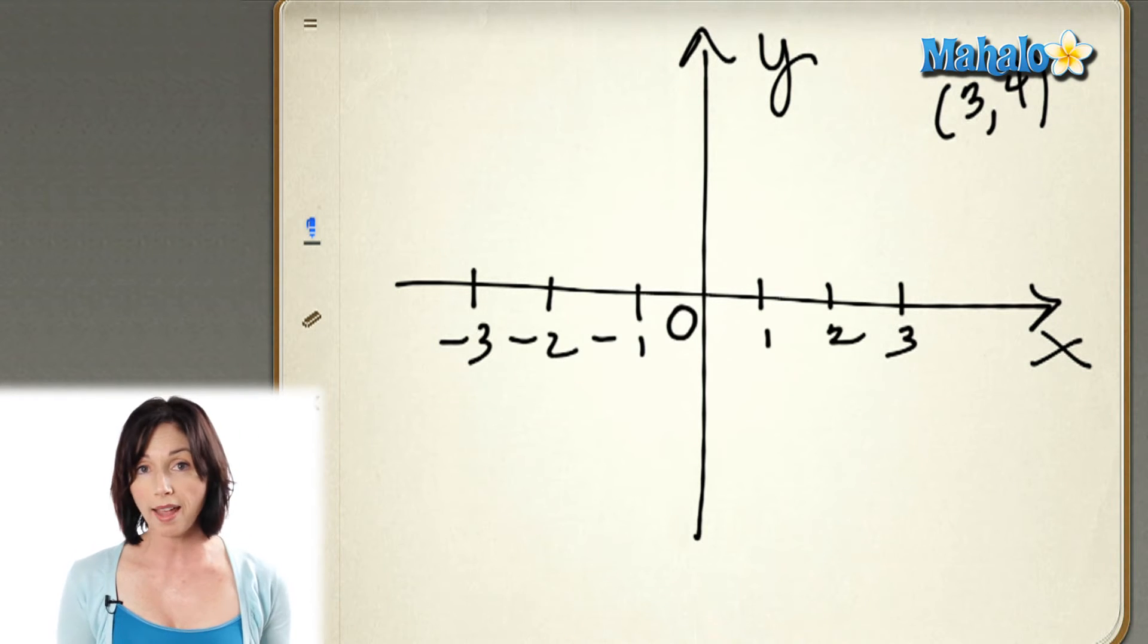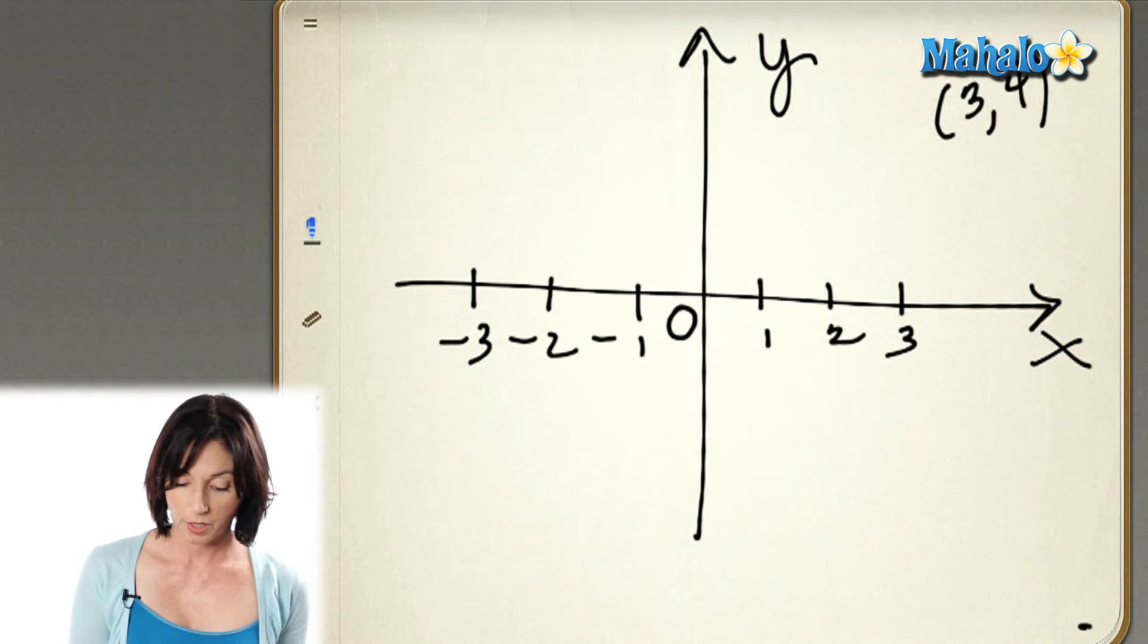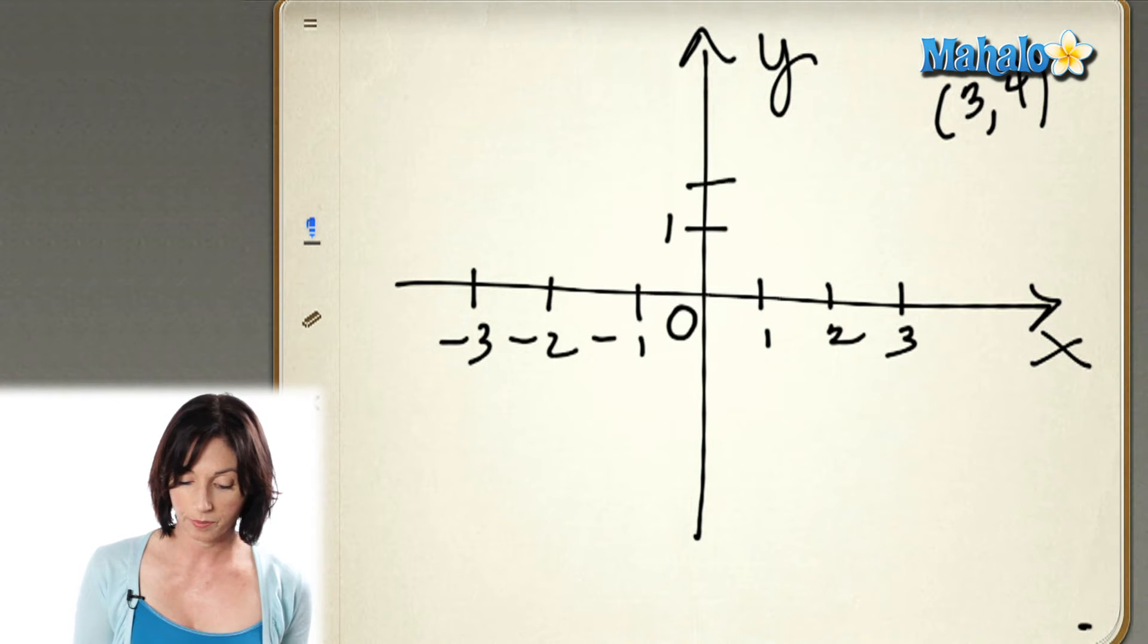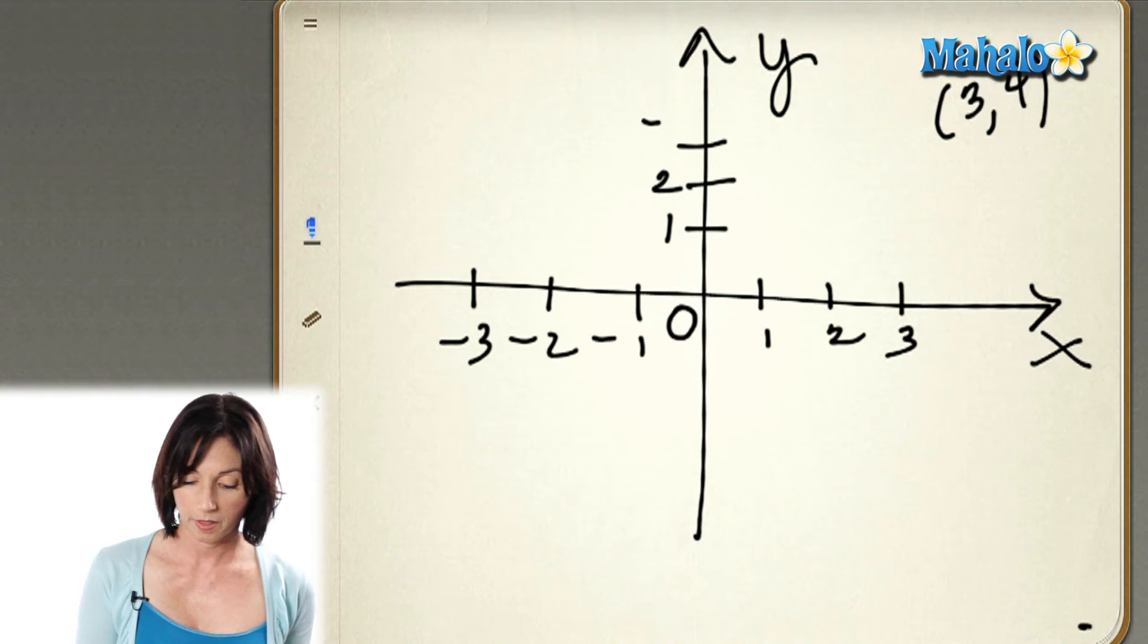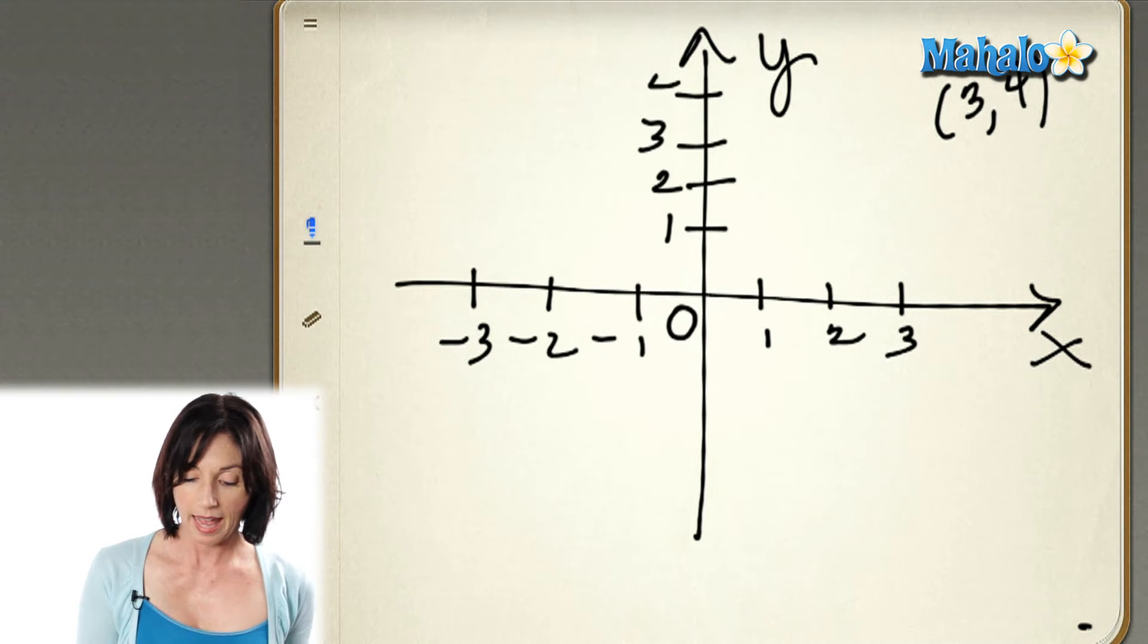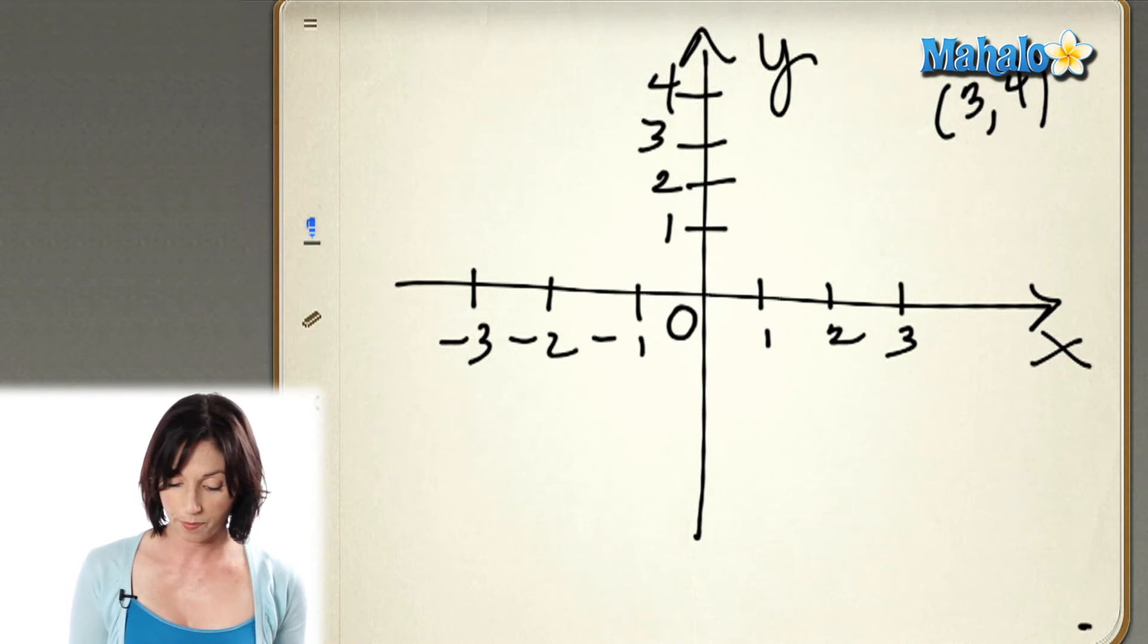Now, for the y-axis, up is positive, so we would have positive numbers here. And down is negative in y. So we would have, I'm just going to label the bottom one. So these are negative values in y, go down.